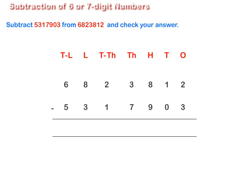Arrange the numbers in columns. Start subtracting from the 1's column till the 10,00,000's column. Decompose the numbers when needed.